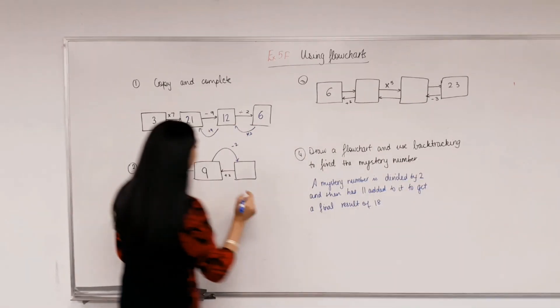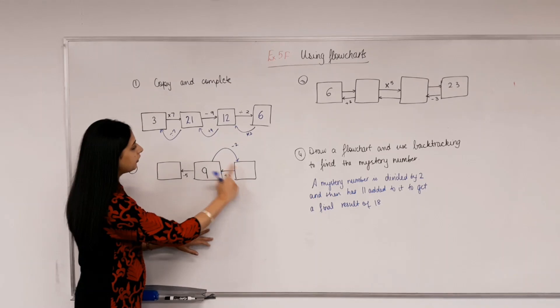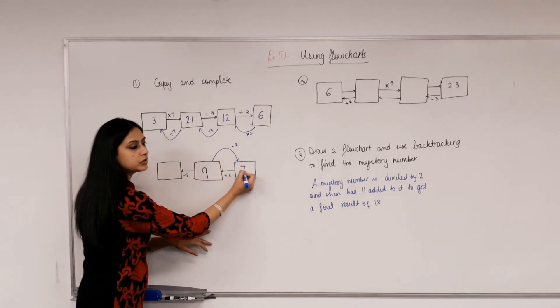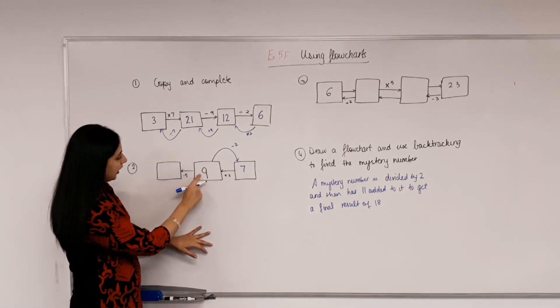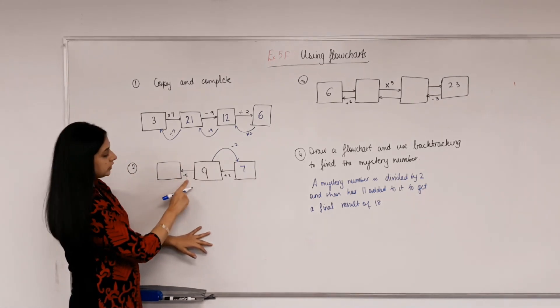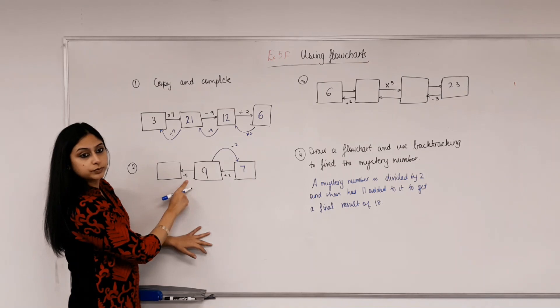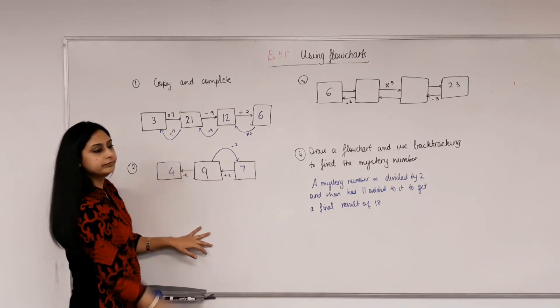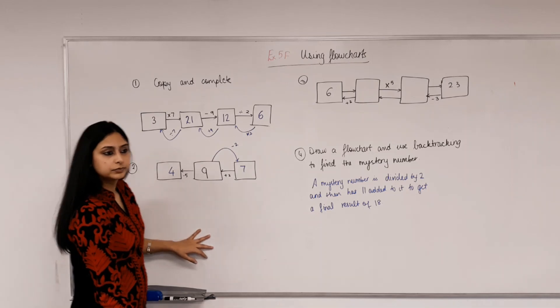Okay. Now, so from 9 to go in this direction, we have to take away 2. So what's 9 take away 2? 7. Eyes on the board, please. Now, so from 9 to here, what is the operation in this direction? 9 take away 5? 4. Simple? Okay.